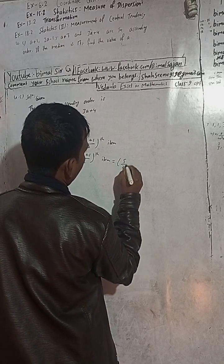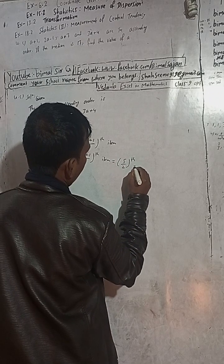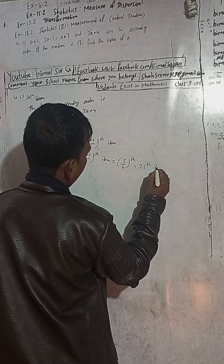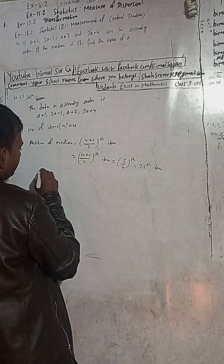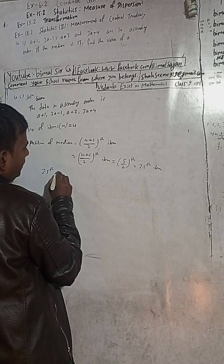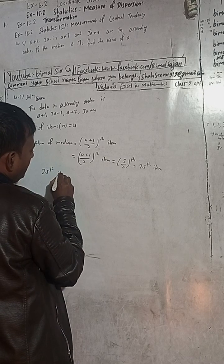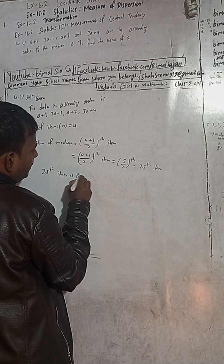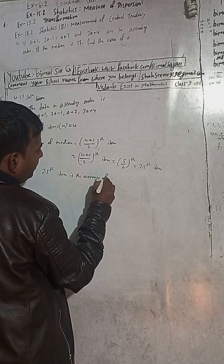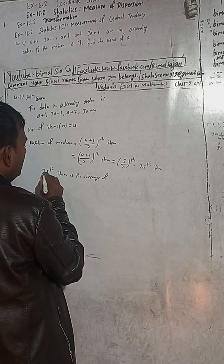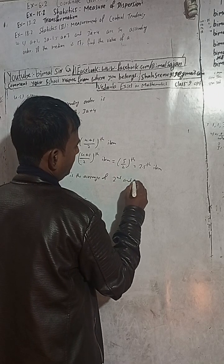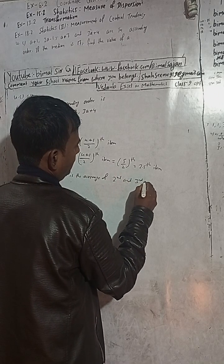Since n=4 (even), the median position is (n+1)/2 = (4+1)/2 = 5/2 = 2.5. The 2.5th item means we take the average of the 2nd and 3rd items.